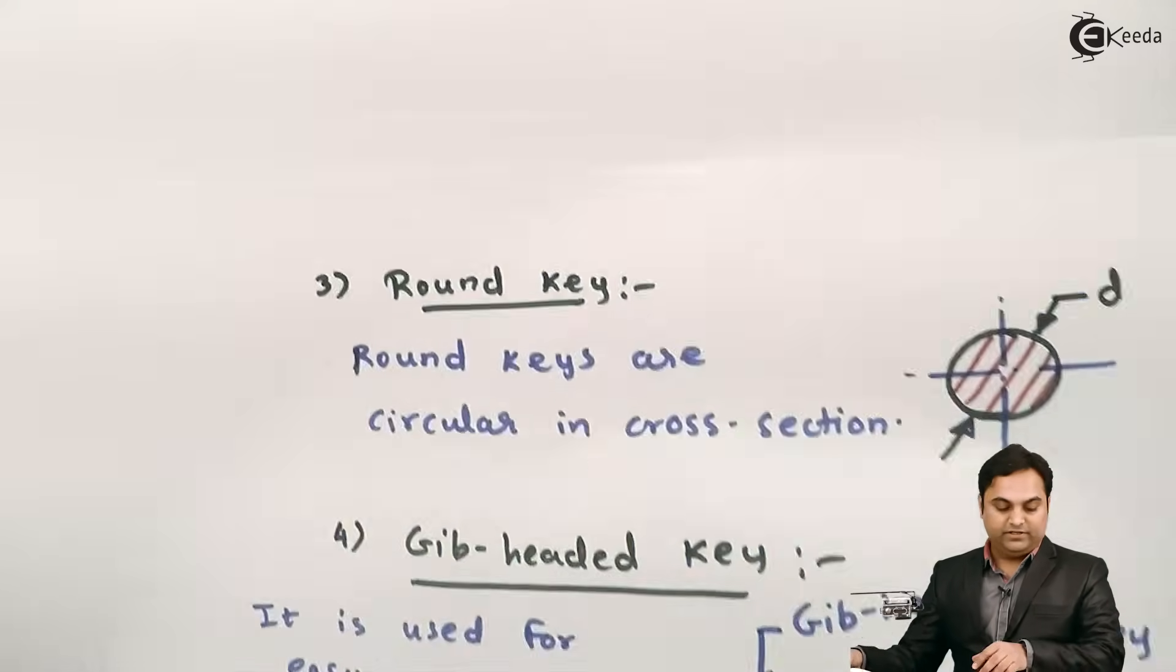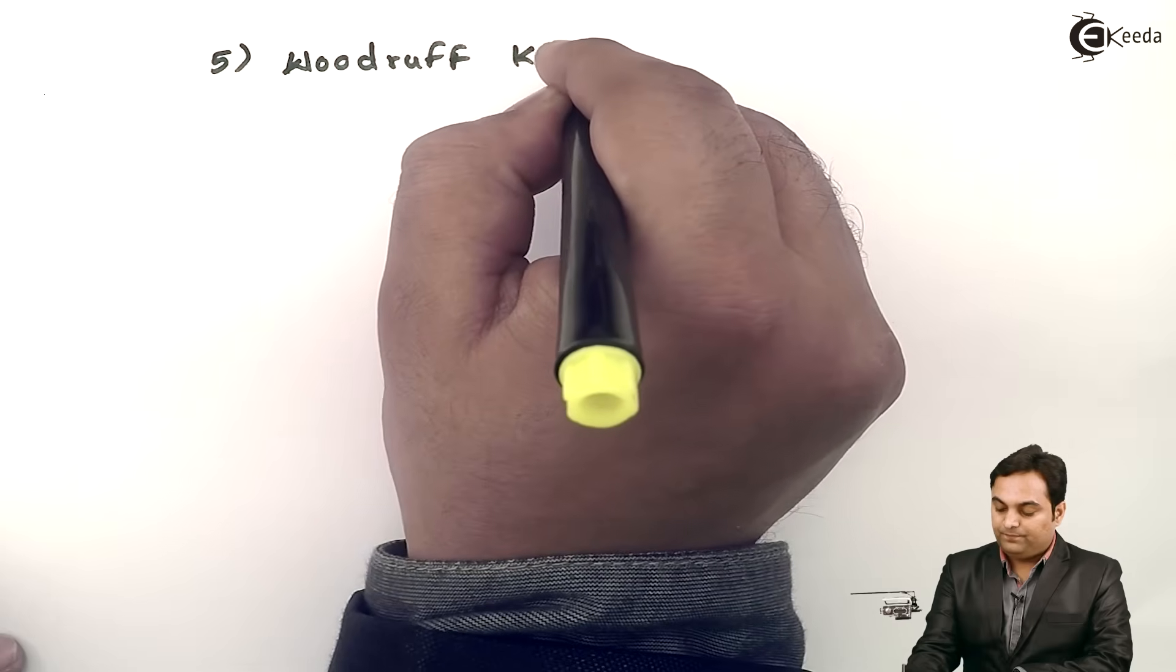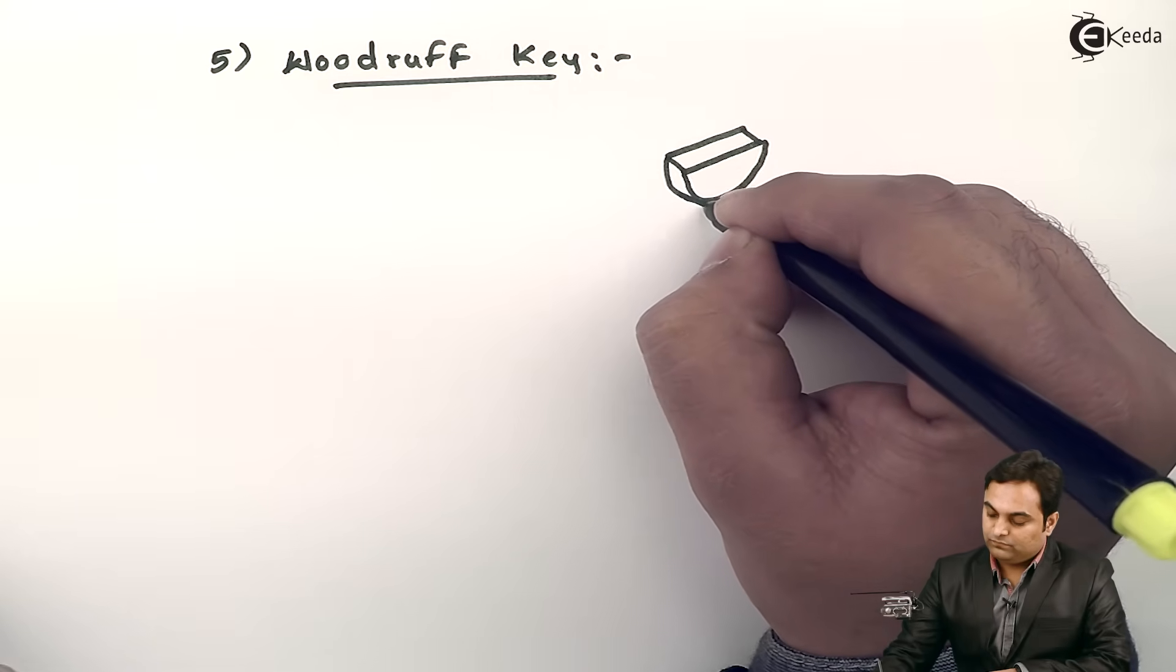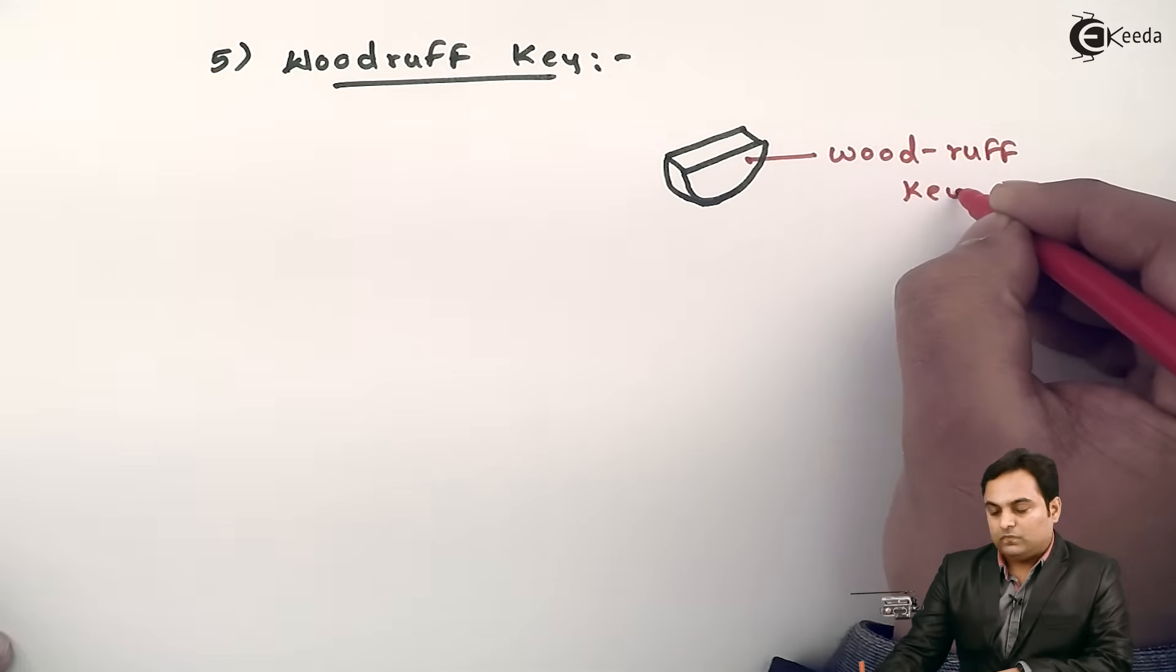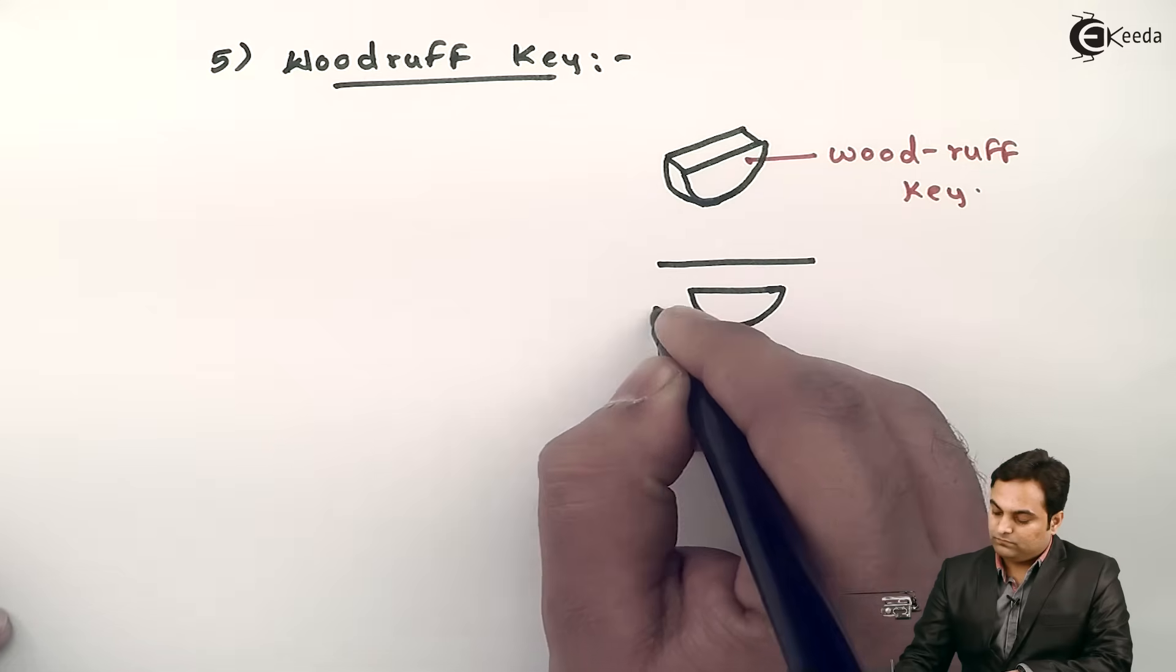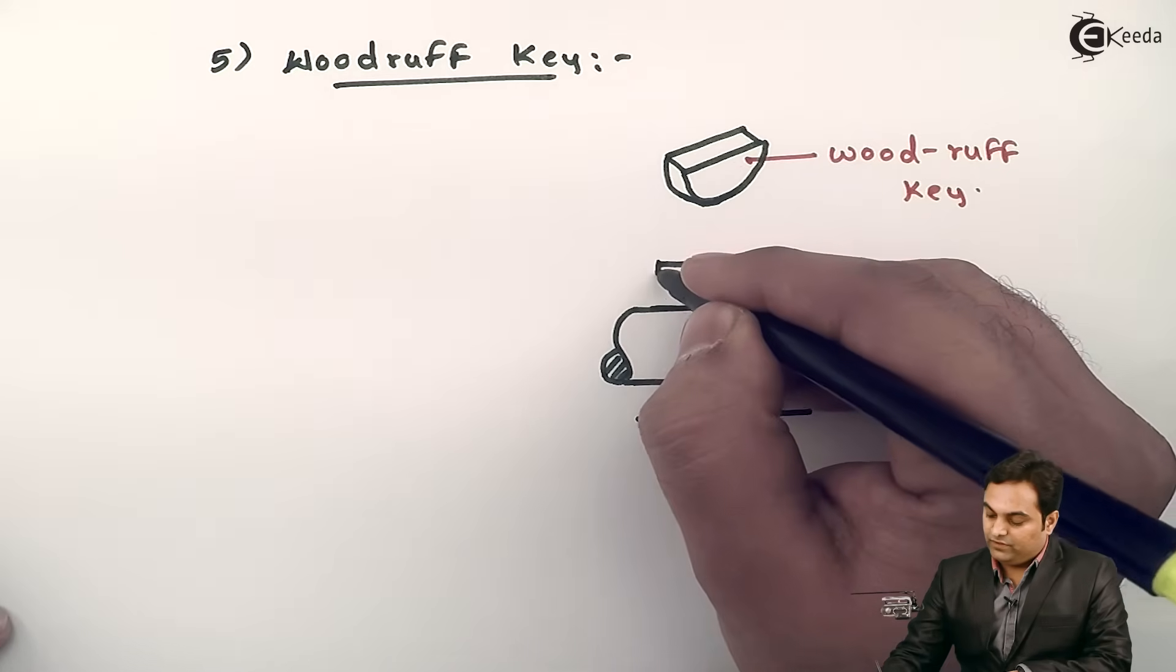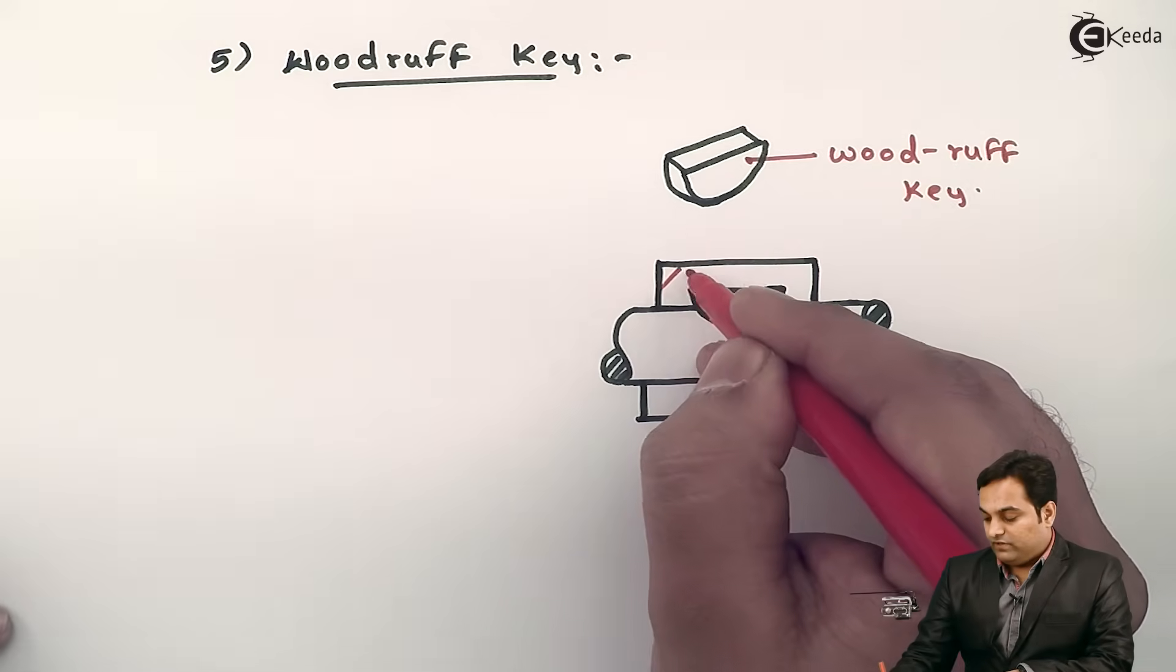Next, after gib-headed key we have Woodruff key. In Woodruff key, the shape of the key is in the form of a semicircular disc. This is a Woodruff key which is semicircular in section, and when it fits it would be looking something like this. That is, if here we have a shaft and this is a sleeve or you can say bearing, so inside this we have the Woodruff key.